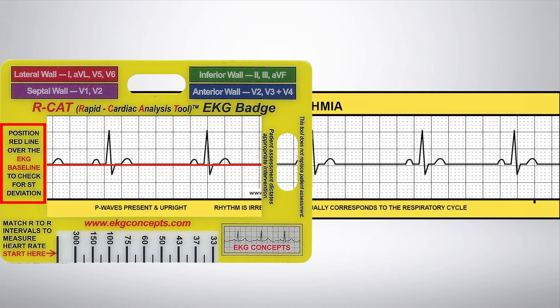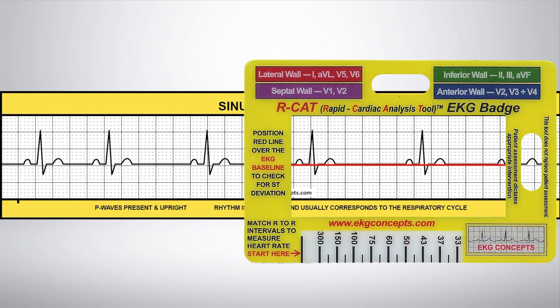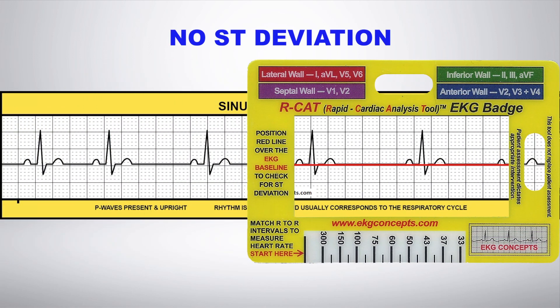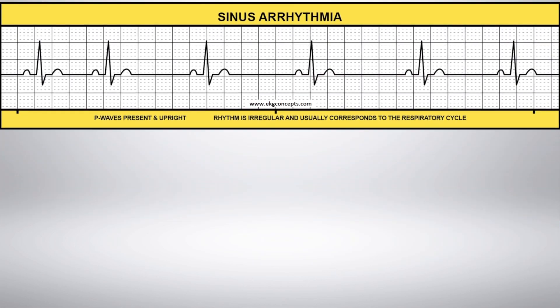Position the EKG badge to slide the red line along the baseline to look for ST deviation. There is no ST deviation. All of the P waves are present and upright.